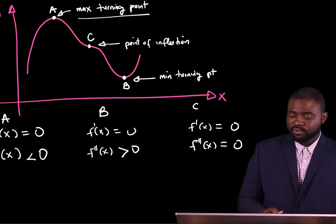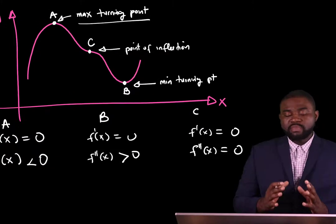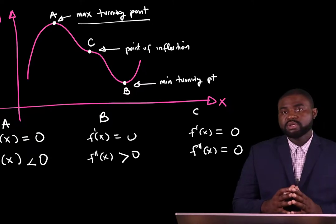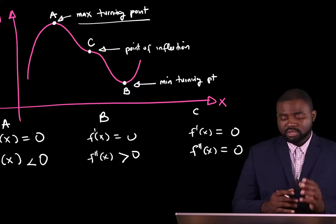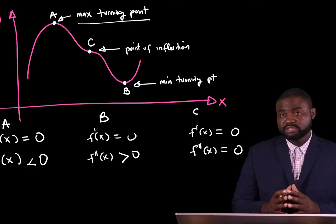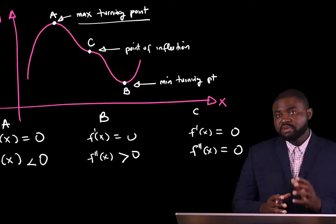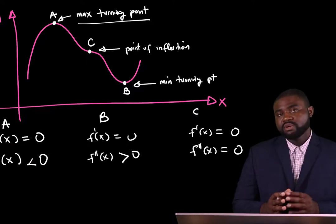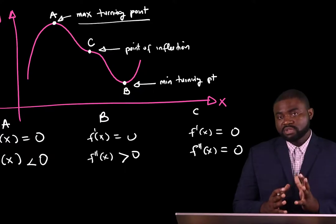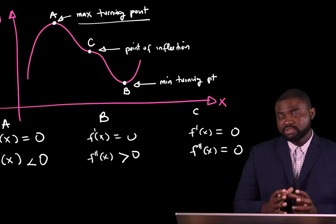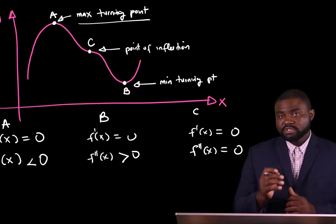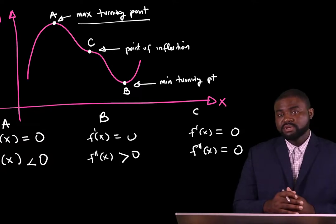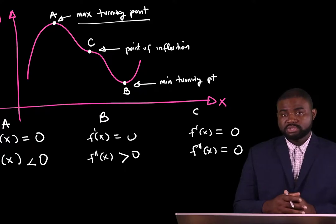Let me distinguish that again. At a maximum turning point, the gradient is 0 — in other words, the first derivative is 0 — and the second derivative is less than 0. At a minimum turning point, the first derivative is 0 and the second derivative is greater than 0. At a point of inflection, the first derivative is 0 and the second derivative is also 0.